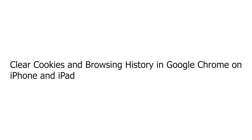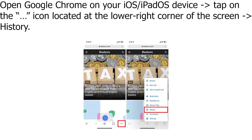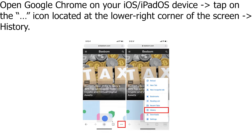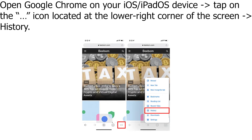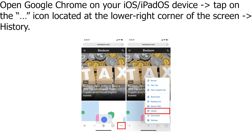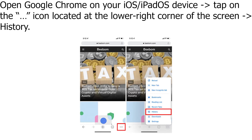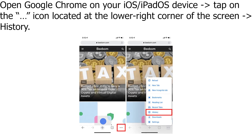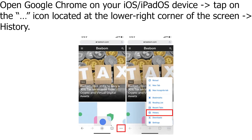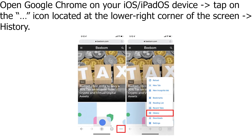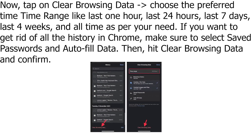To clear cookies and browsing history in Google Chrome on iPhone and iPad, open Google Chrome on your iOS device. Tap on the icon located at the lower right corner of the screen, then go to History.